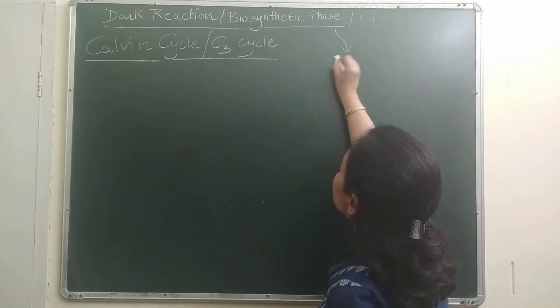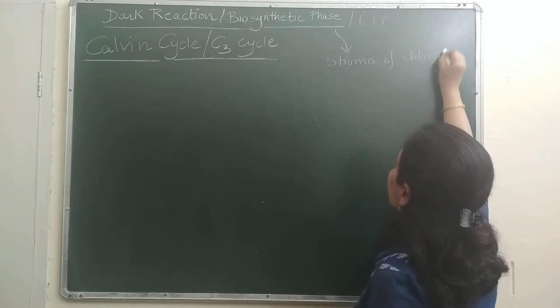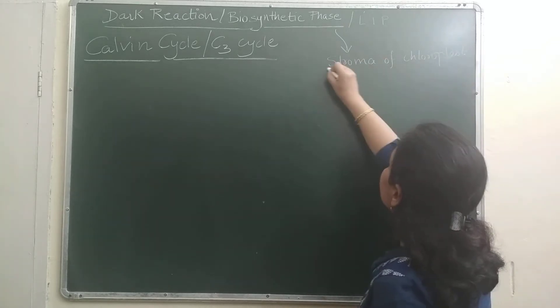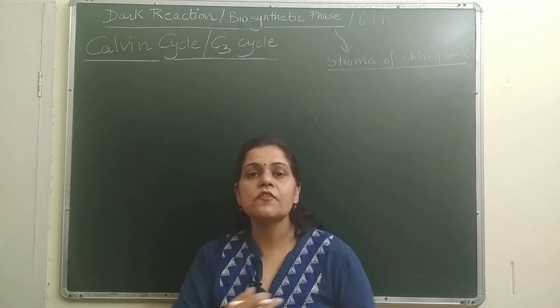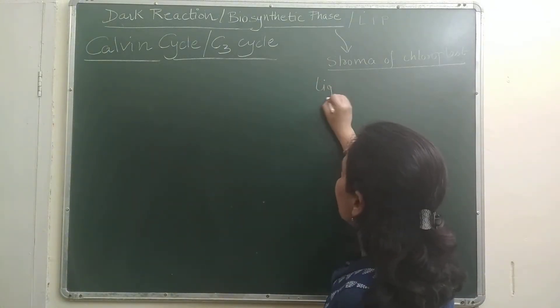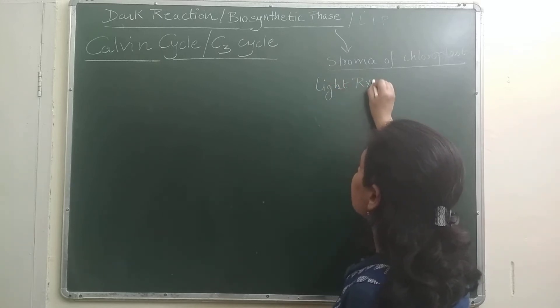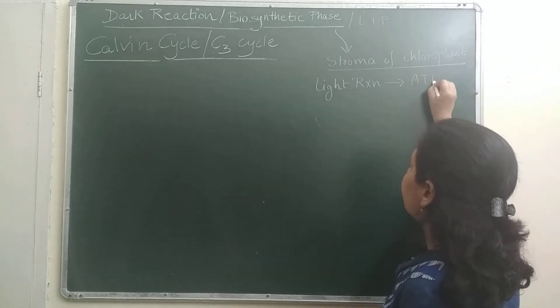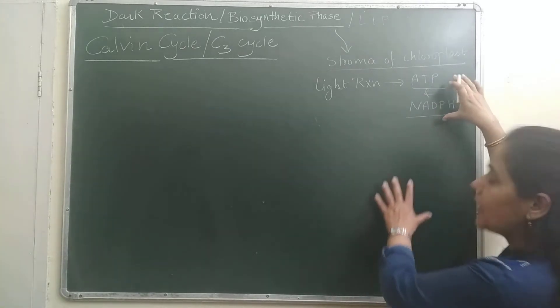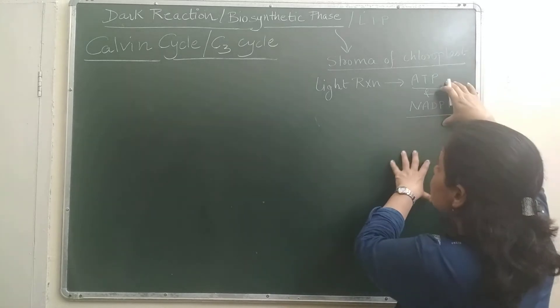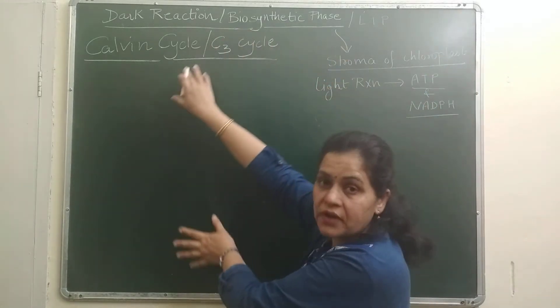Where is dark reaction? It occurs in stroma of chloroplast. And it doesn't depend on light directly, but it depends on the products of light reaction. Light reaction we have learned that during light reaction, what is being produced? Assimilatory powers - ATP and NADPH. These two things are made, which we are talking about assimilatory powers. These two products of light reactions are used during dark reaction.